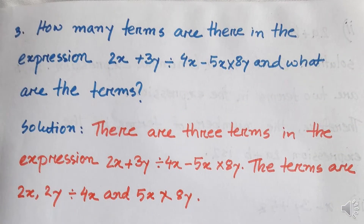Number 3. The question is: how many terms are there in the expression 2x plus 3y divided by 4x minus 5x into 8y? And what are the terms?